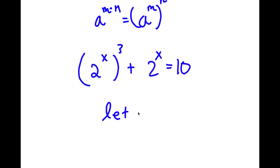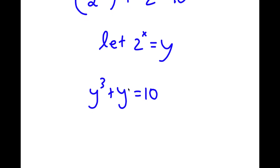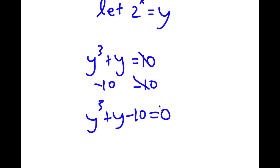I'm going to let 2 to the power of x equal to the variable y. So now I have y to the power of 3 plus y is equal to 10. If I subtract 10 on both sides, I get y to the power of 3 plus y minus 10 is equal to 0.